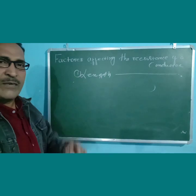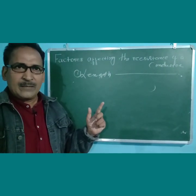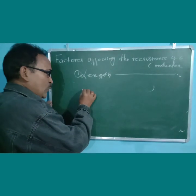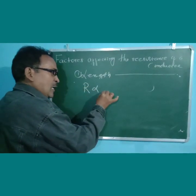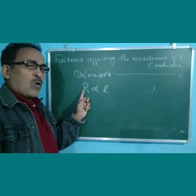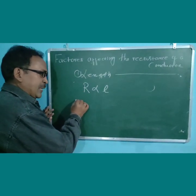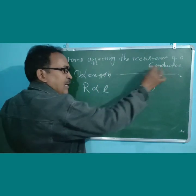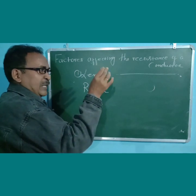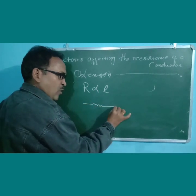The first factor is length of a conductor. When we increase the length of the conductor, the resistance will automatically increase. So resistance is directly proportional to the length of the conductor. If you double the length of the conductor, to make an equivalent circuit we have to use two conductors connected in series.